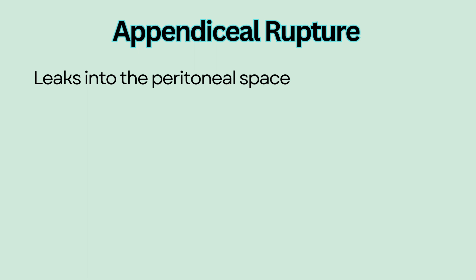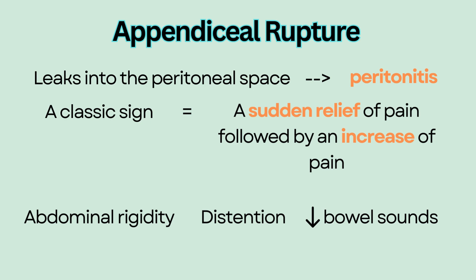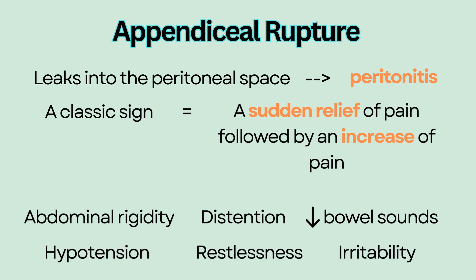Appendiceal rupture is a complication of appendicitis when the appendix ruptures and leaks into the peritoneal space, resulting in peritonitis. A classic sign of a perforated appendix is a sudden relief of pain followed by an increase of pain in the right abdomen with guarding. Other signs include progressive abdominal rigidity, distension, diminished bowel sounds, hypotension, restlessness, and irritability.